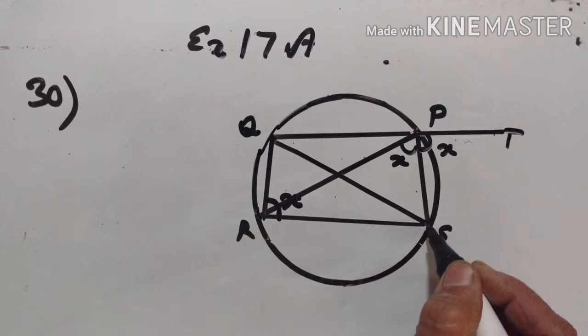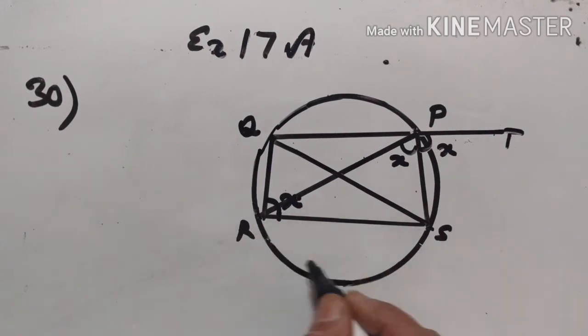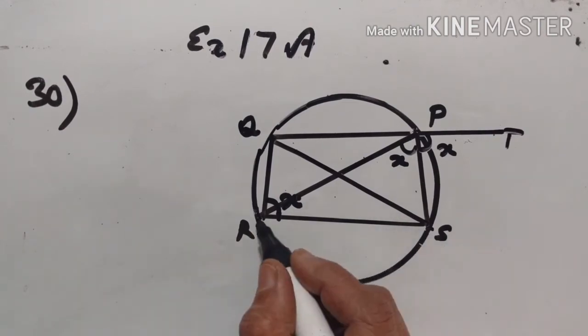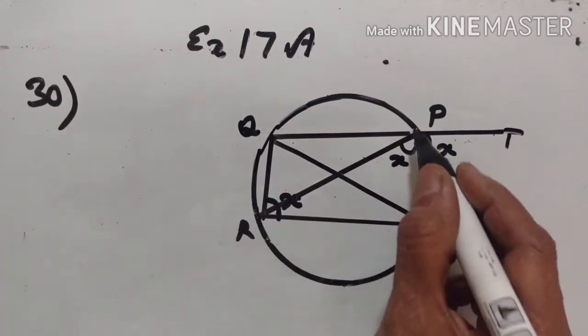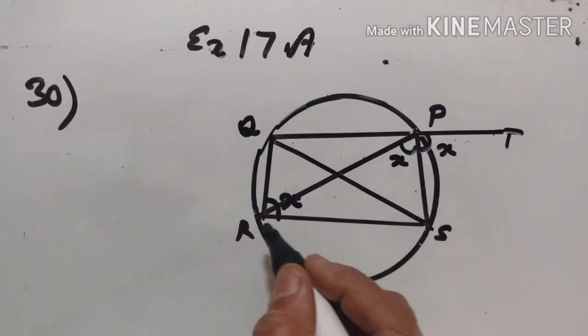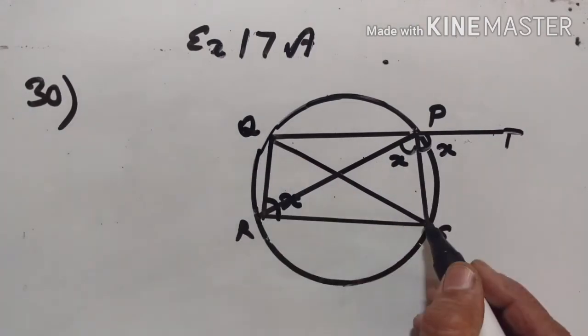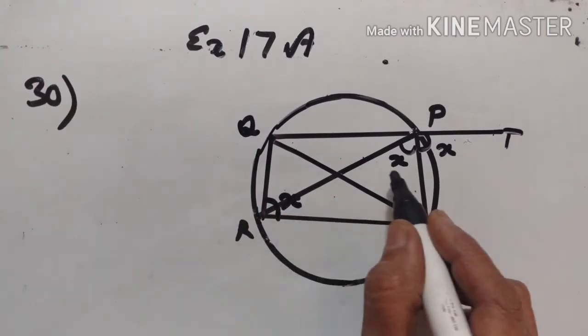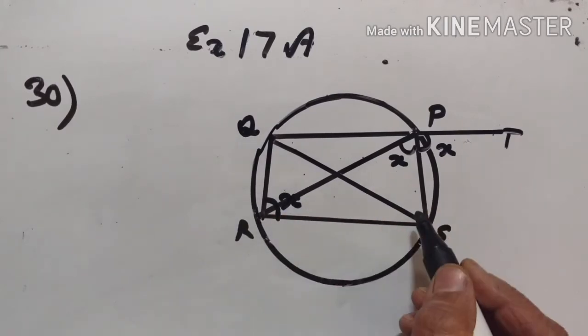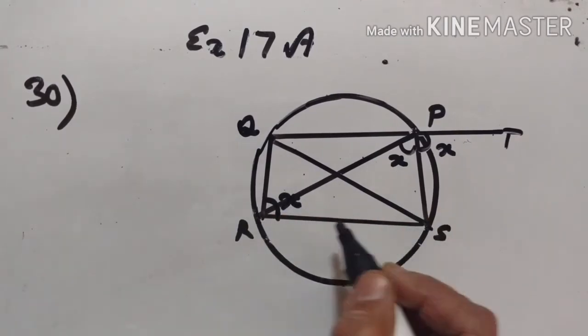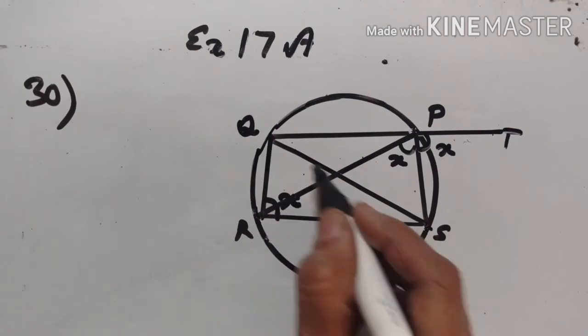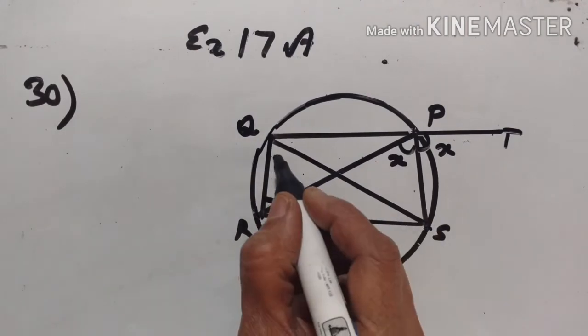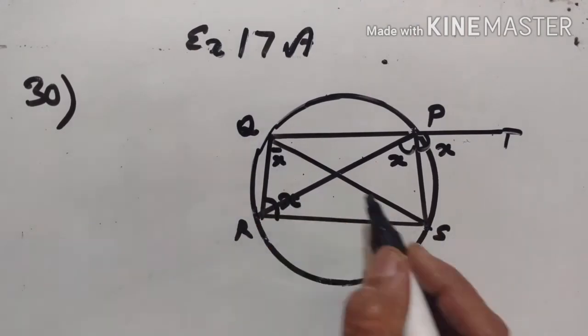Now, arc RS subtends angle RPS and angle RQS. Angles in the same segment are equal. Therefore, angle RPS is equal to angle RQS, and this is also X.